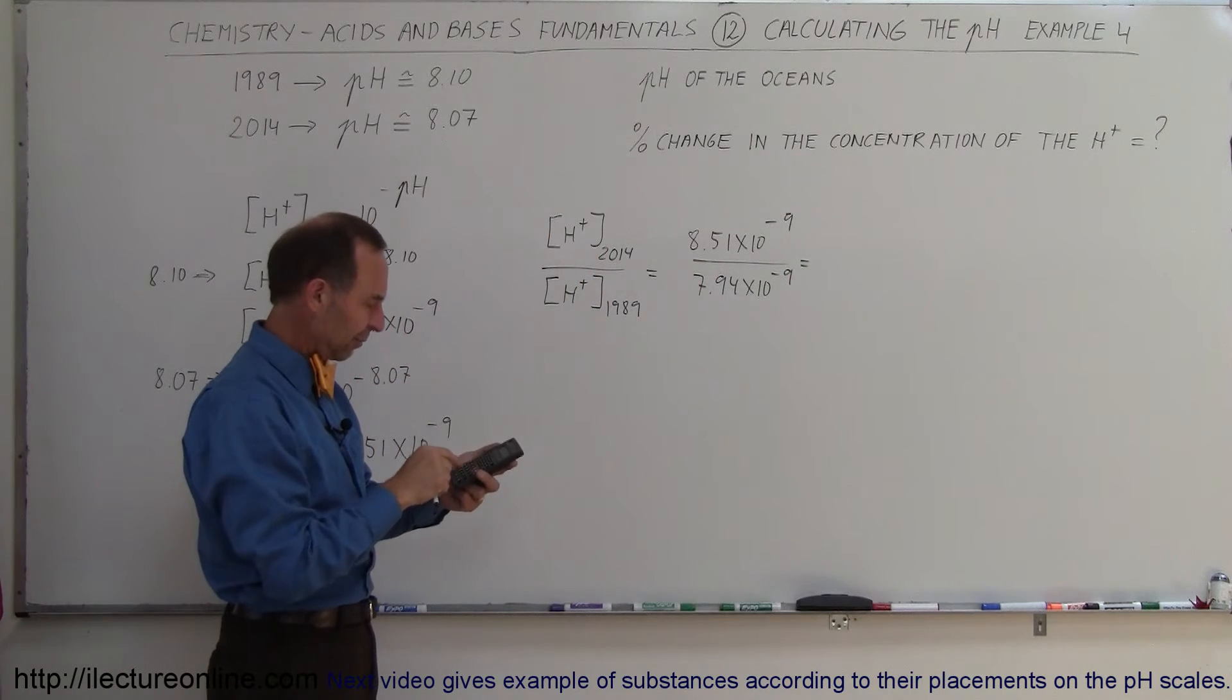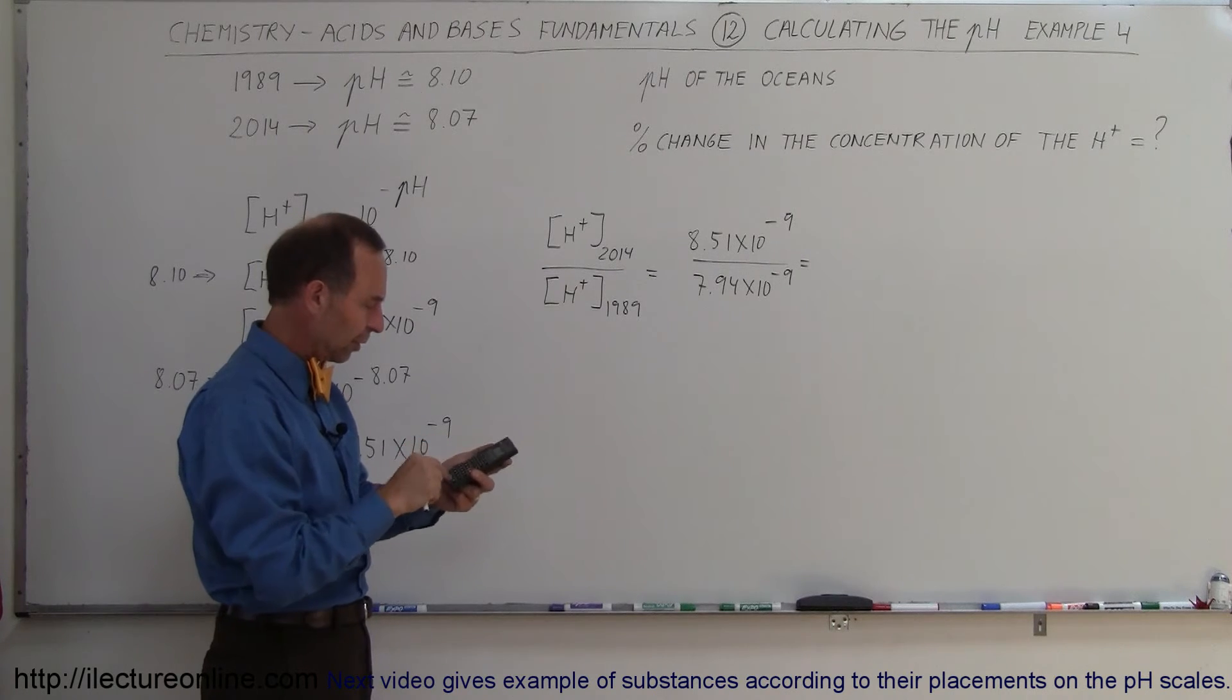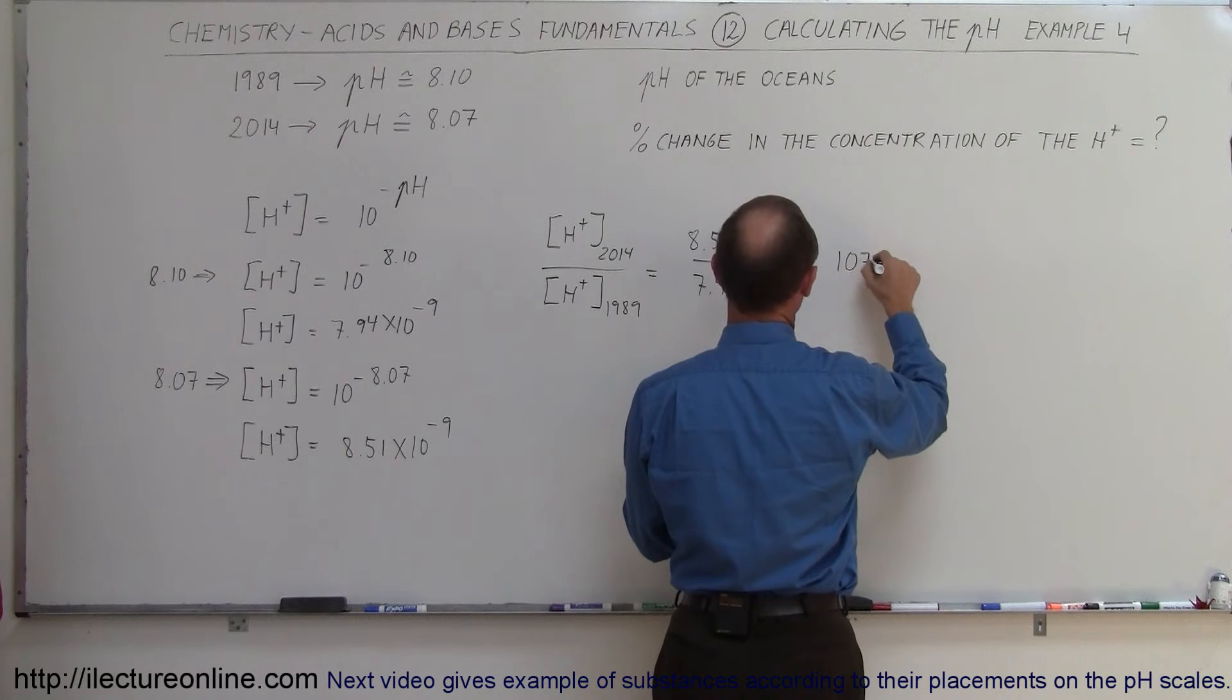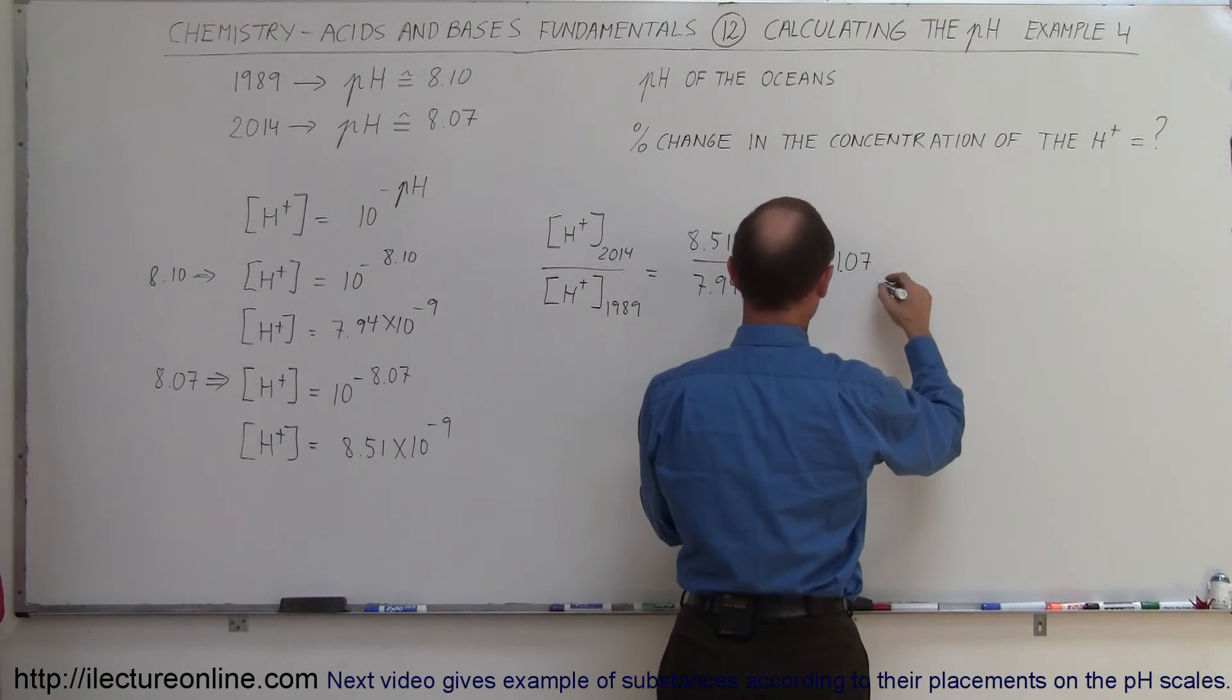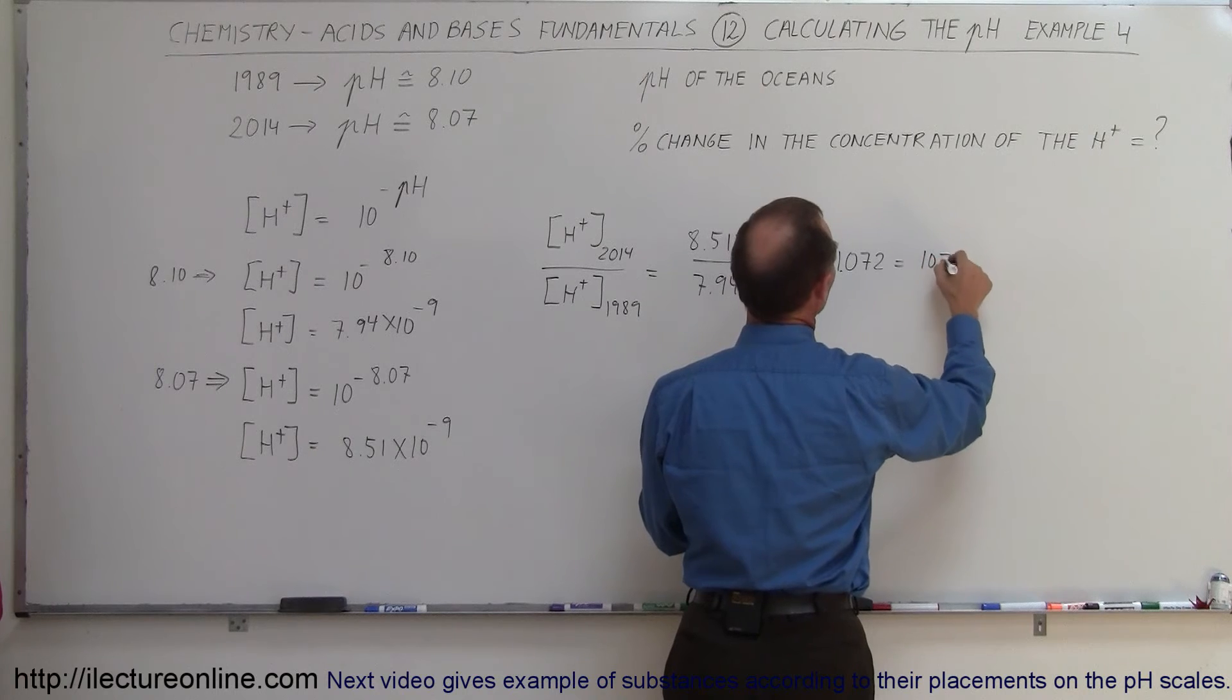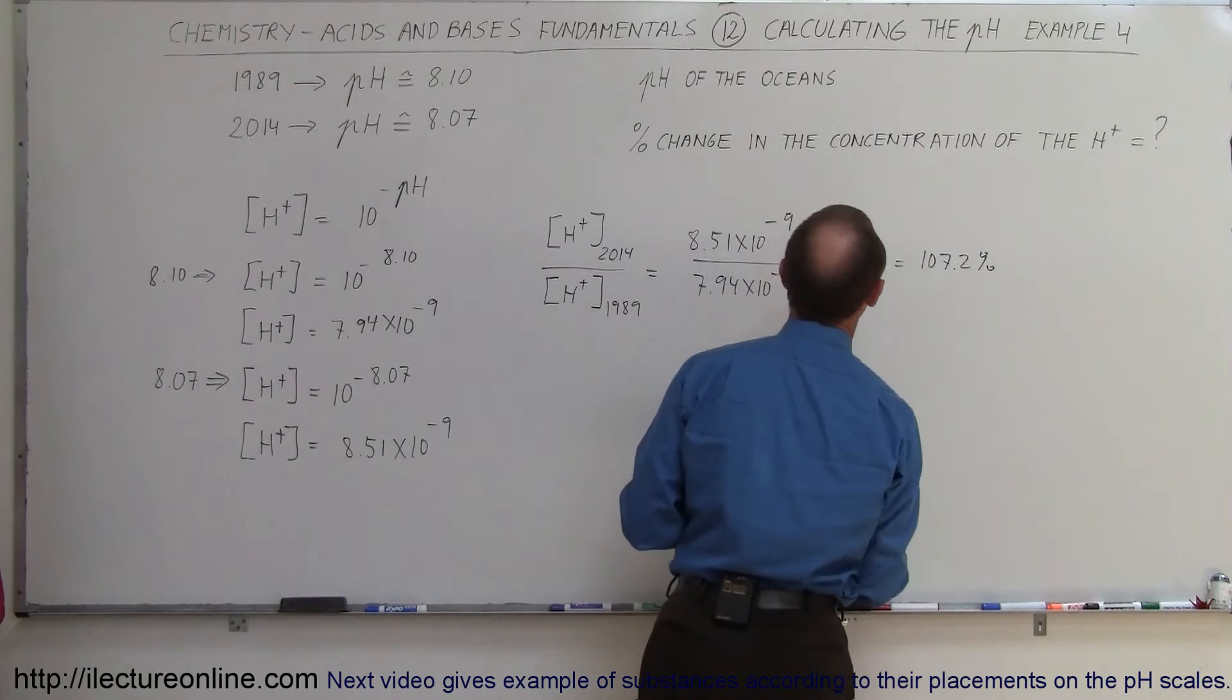Let's see what we get. So we get 8.51 divided by 7.94, and we get 107, so 1.072.